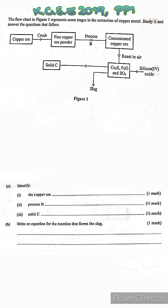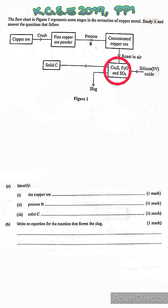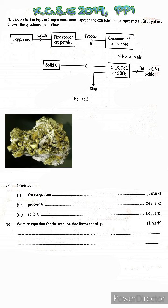Our starting point is the copper ore. Copper has several ores: copper pyrites, cuprite, chalcolite, and malachite. How do we know which ore this flowchart refers to? Here's the hint: whatever ore this is, when roasted in air, it forms three compounds — copper(I) sulfide, copper(II) oxide, and sulfur dioxide. That indicates no other ore except copper pyrites, which is the main ore of copper.